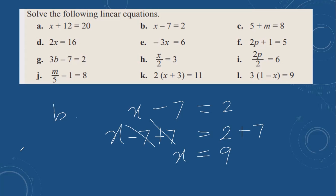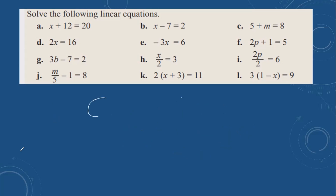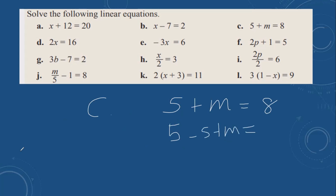Then the next one, c: 5 plus m equals 8. The opposite of plus 5 is minus 5. You do the same thing to this side also. These two cancel out, so m is equal to 3.